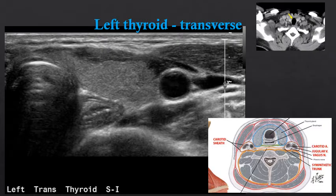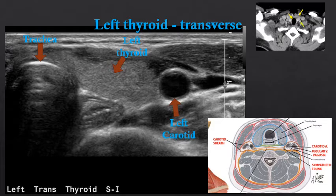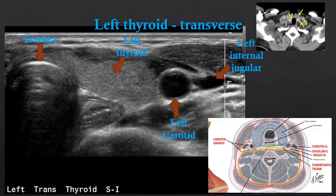Taking a second look at the left neck we again see the trachea at midline, the left lobe of the thyroid, the carotid artery, and the internal jugular vein. Between the internal jugular vein and the carotid artery within the carotid sheath is the vagus nerve. The vagus nerve in this instance is quite small and difficult to definitively resolve on ultrasound.